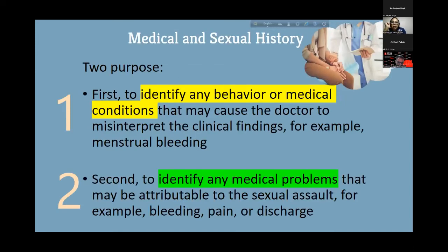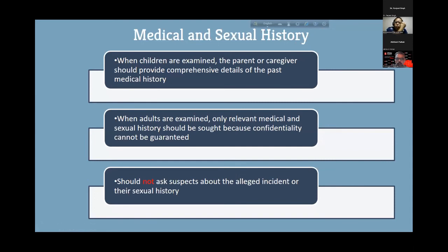Medical and sexual history serve two purposes: first, to identify behaviors and medical conditions that may cause the doctor to misinterpret clinical findings — for example, menstrual bleeding; and second, to identify medical problems attributable to the sexual assault, such as bleeding, pain, or discharge. When children are examined, parents or caregivers should provide comprehensive medical history. When adults are examined, only relevant medical and sexual history should be sought due to confidentiality.